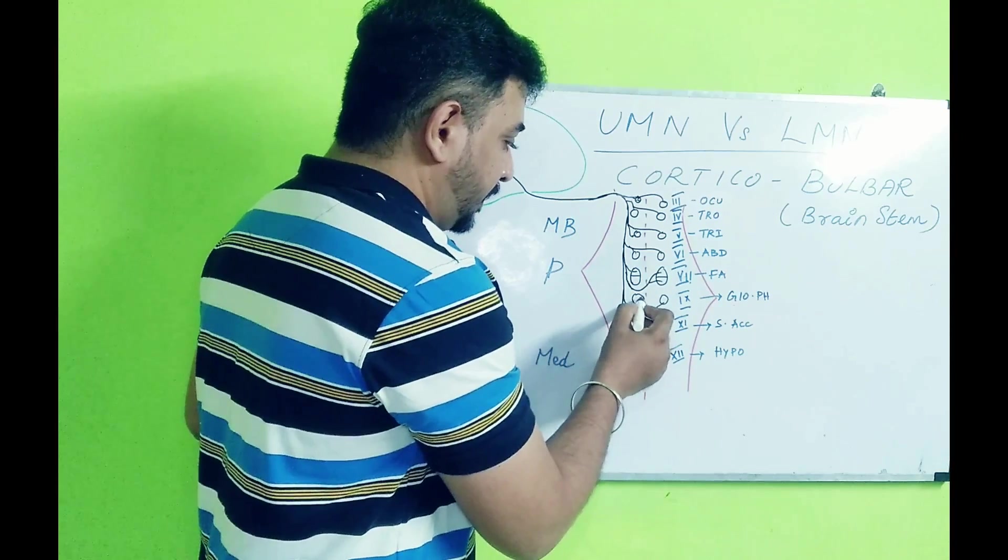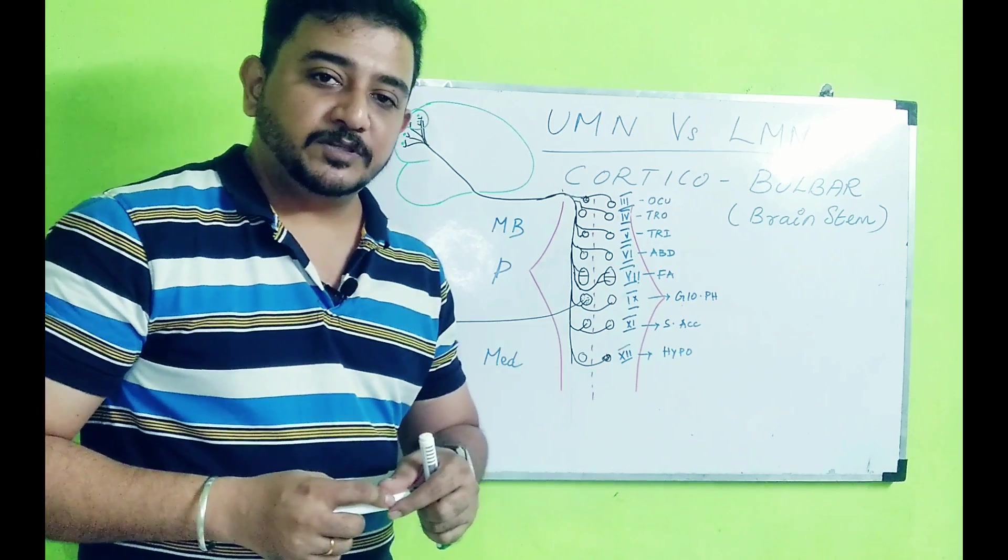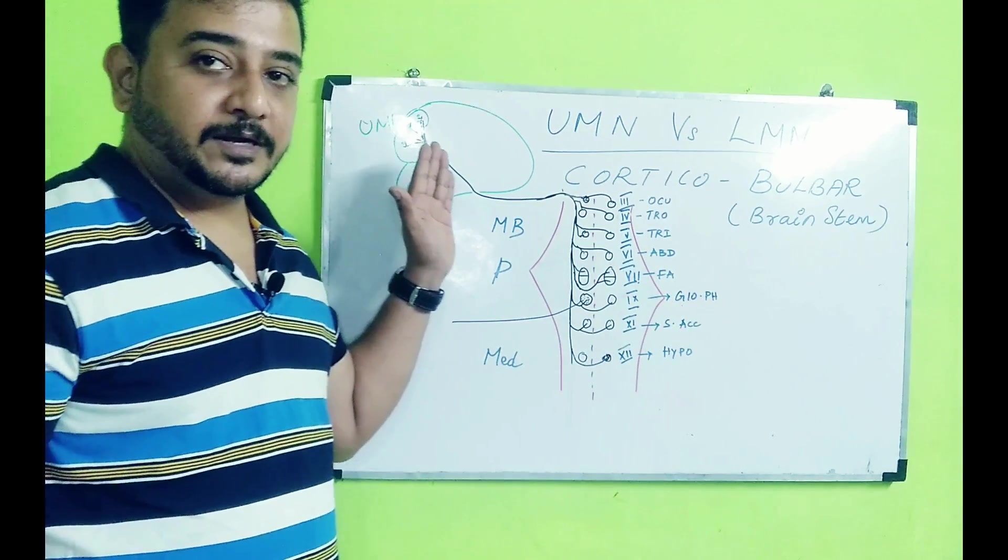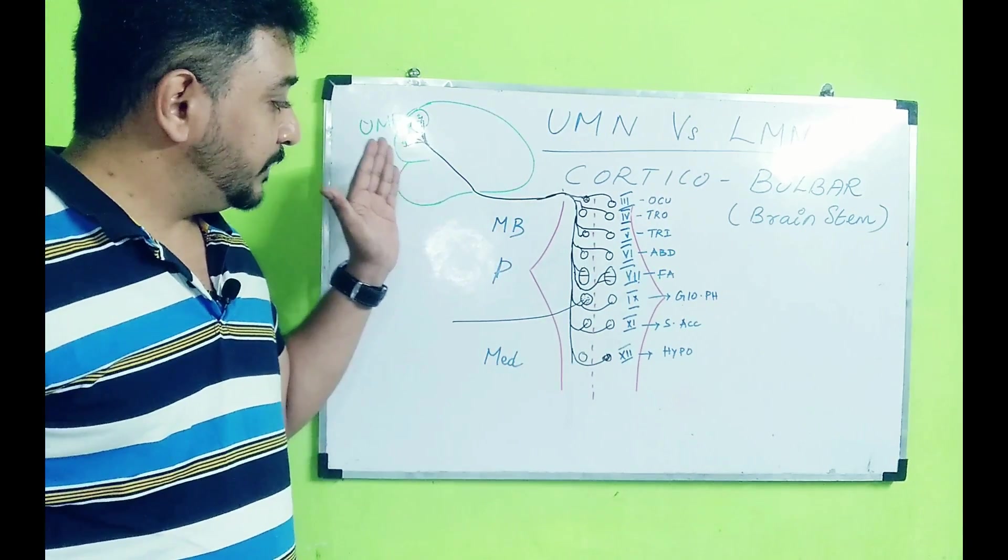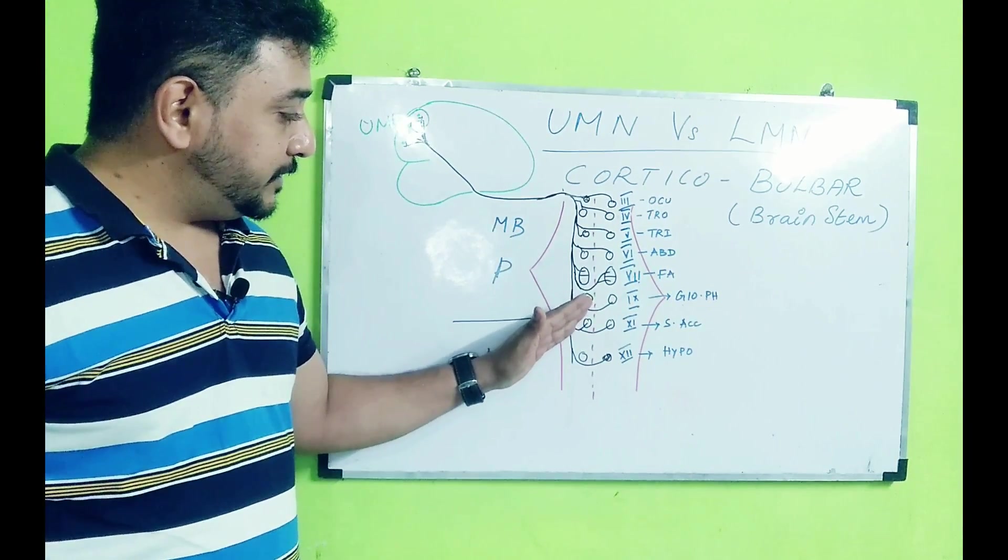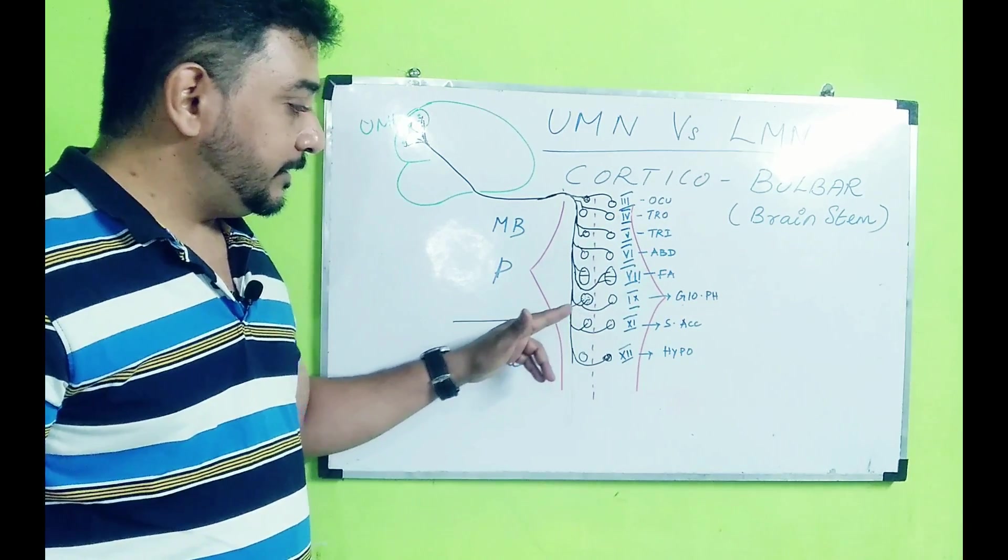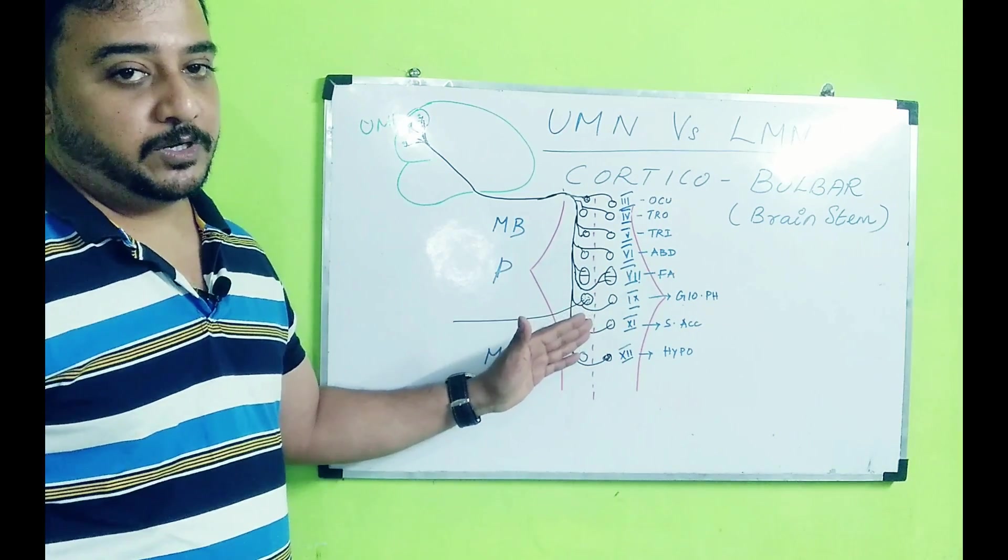For example, if you take the glossopharyngeal nerve, you have the nucleus of the glossopharyngeal here and from here the glossopharyngeal nerve comes out. So which is the upper motor neuron and which is the lower motor neuron? The cells in the cerebral cortex are the upper motor neurons for the corticobulbar tract, and the respective cells in the cranial nerve nuclei which give rise to the cranial nerve are the lower motor neurons.